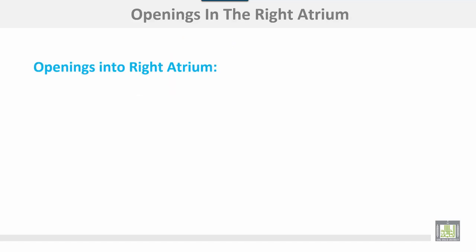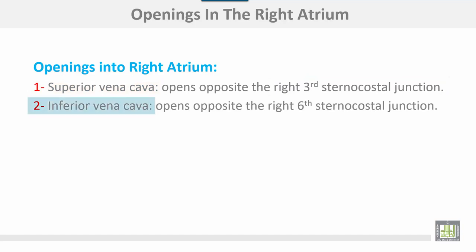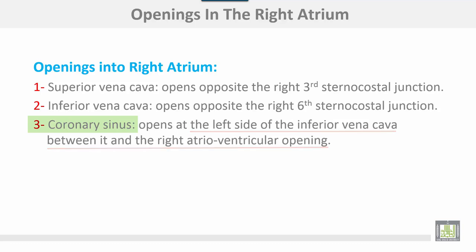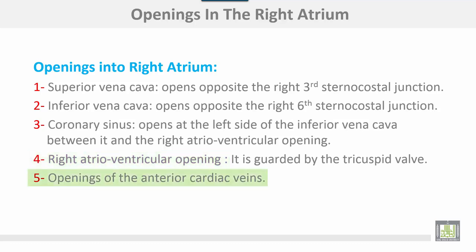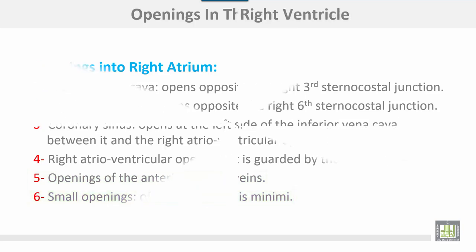Openings in the right atrium: number one, the superior vena cava opens opposite the right third sternocostal junction; the inferior vena cava opens opposite the right sixth sternocostal junction; the coronary sinus opens at the left side of the inferior vena cava, between the inferior vena cava and the right atrioventricular opening; the right atrioventricular opening or tricuspid valve; and the openings of the anterior cardiac veins and small openings for the venae cordis minimae.